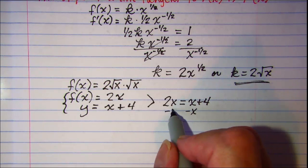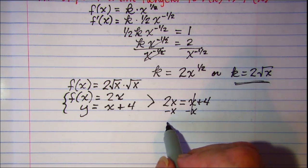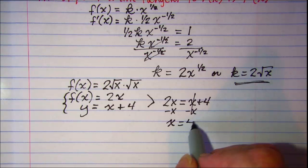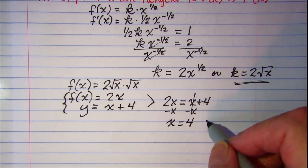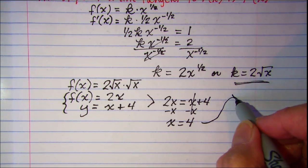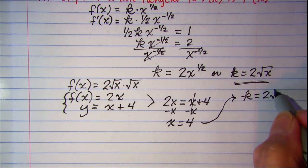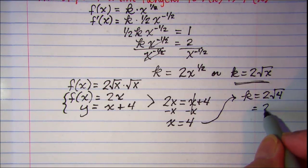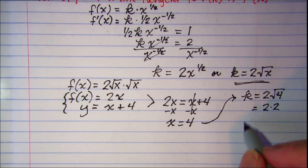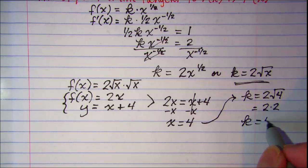Subtracting x from both sides we get x is equal to four. So that means then k is equal to two times the square root of four. Two times two, k is equal to four.